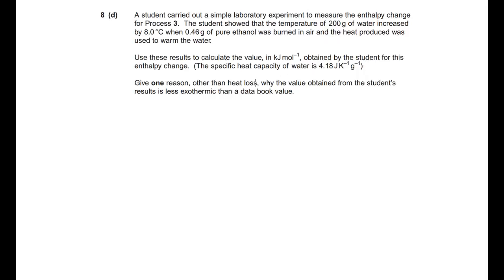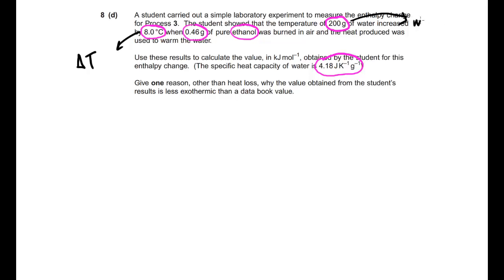It looks very long but it's actually quite simple. Let's pick out what we need: 200 grams of water — that's going to be important. 8 degrees Celsius — that's our temperature change; they're giving it to us directly. 0.46 grams of ethanol — important for later. 4.18 J/K/g — that's C. So delta T is 8 degrees Celsius, mass is 200 grams — not even given in cm³, already as a mass — and C is 4.18 as promised.